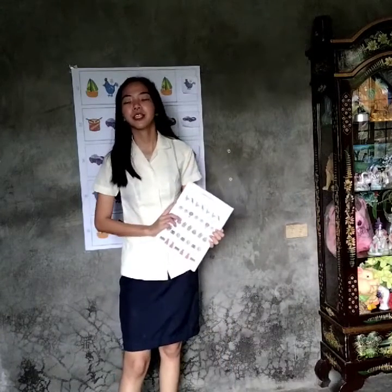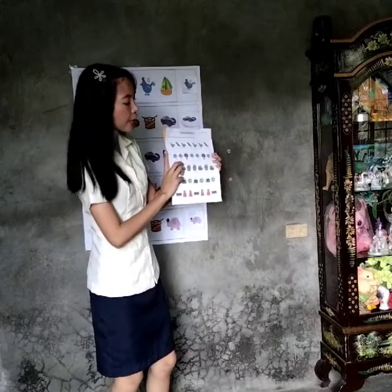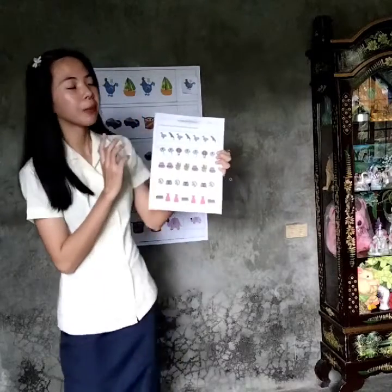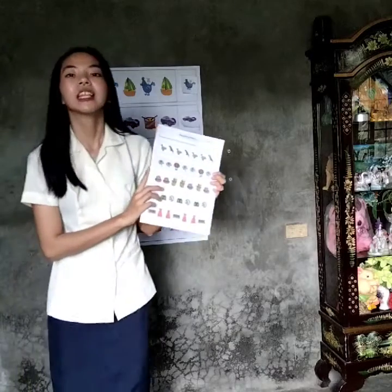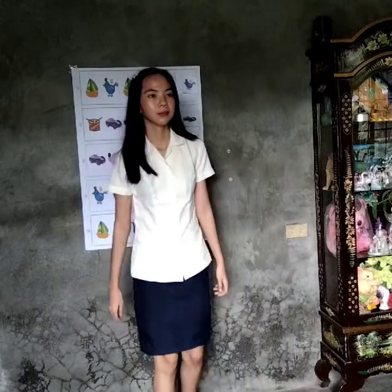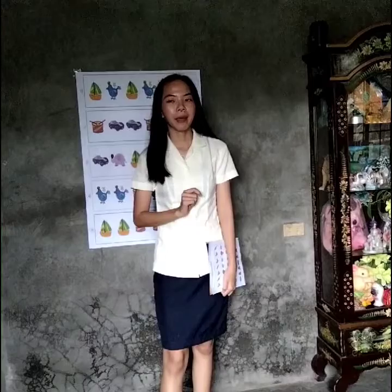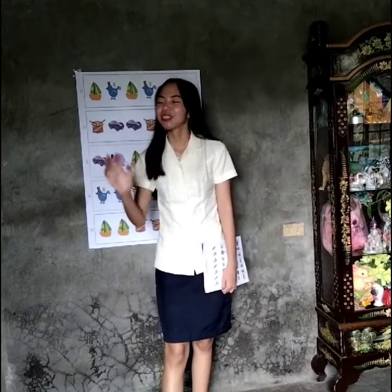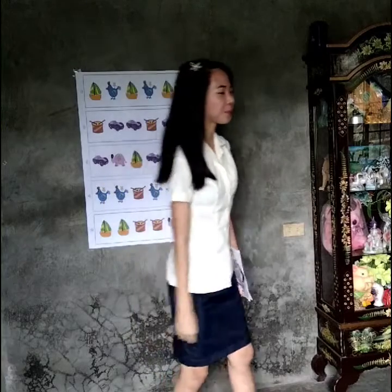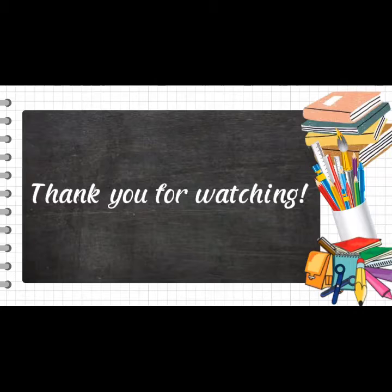Let's see if you really understand our topic for today. I have your worksheet. You are going to identify the missing term in the given items and circle the pictures on the right side to complete the pattern. Get one and pass. Okay class, pass your paper forward. For your assignment, on a short bond paper, draw something that shows a repeating pattern. That's all for today. Goodbye, class! Thank you.